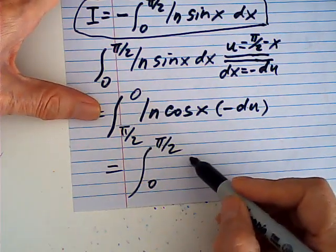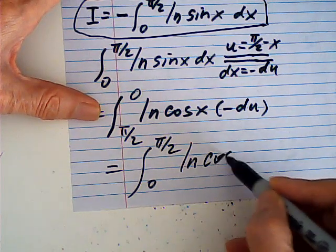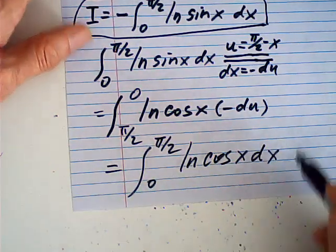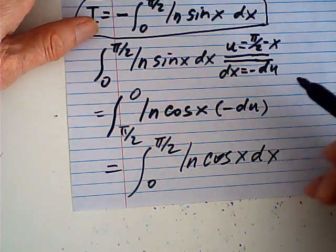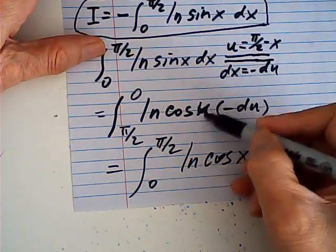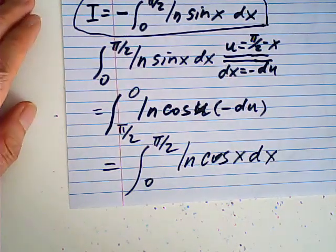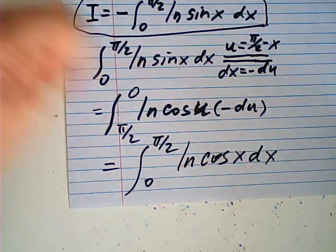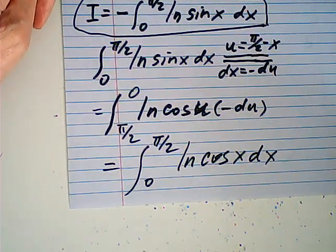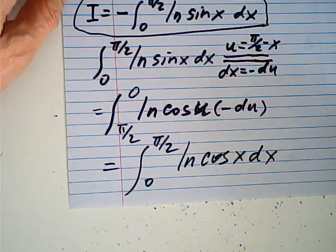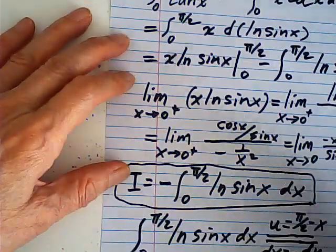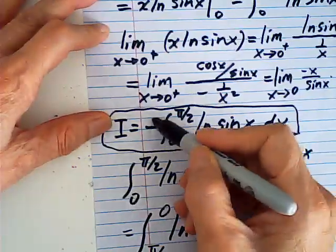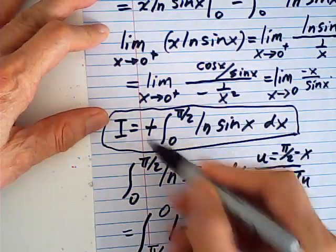So this becomes the integral of log(cos x) dx — after switching limits to absorb the negative sign. Since u is a dummy variable, the integral of log(sin x) dx equals the integral of log(cos x) dx. Let me call the integral of log(sin x) dx from 0 to π/2 as I₁. So I₁ also equals the integral of log(cos x) dx.